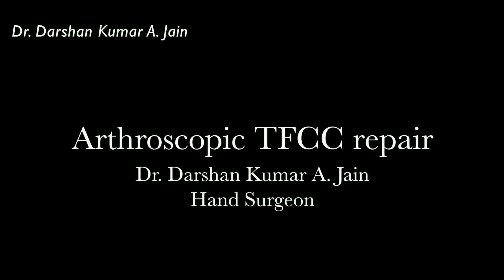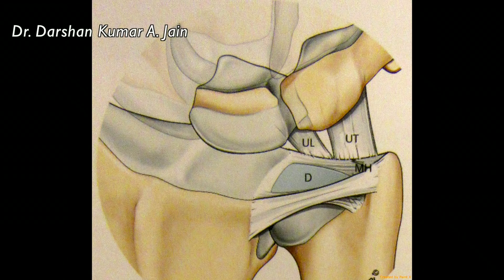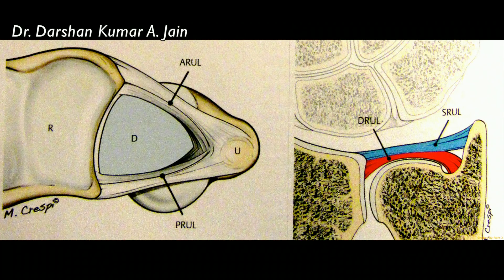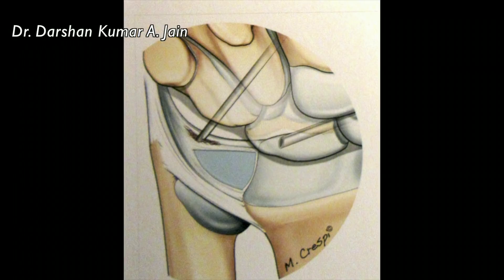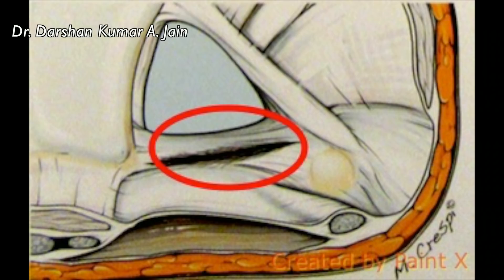I will be demonstrating the arthroscopic repair of the TFCC at the capsule. The TFCC is composed of the dorsal and the volar limbs along with the meniscal homolog, and it has a superficial and deep limb as well near the foveal insertion. The foveal insertion is one of the attachments which gets injured, and the other is the dorsal capsule — these are the two types which are commonly injured.